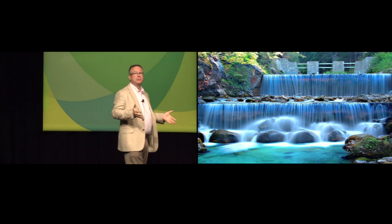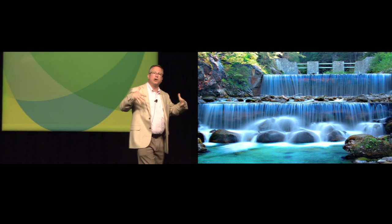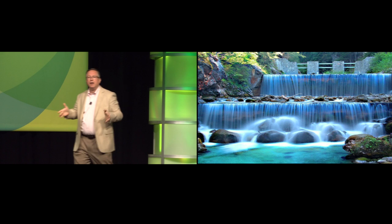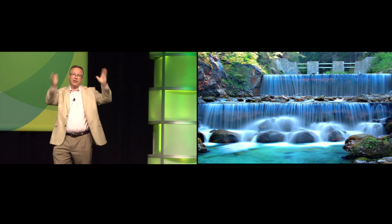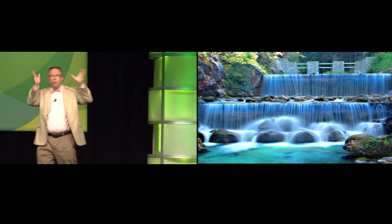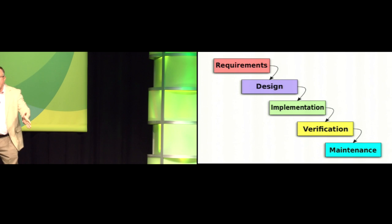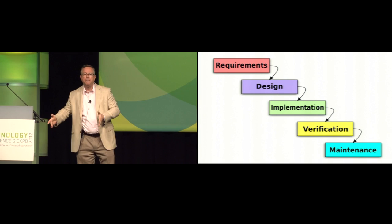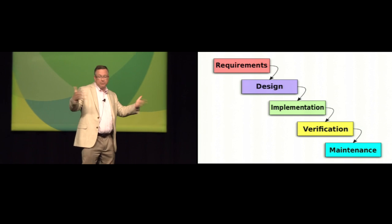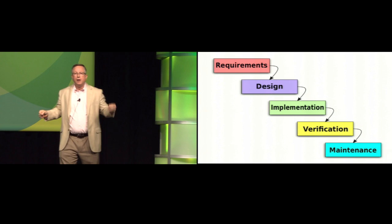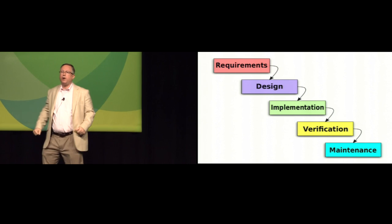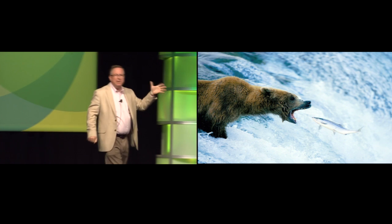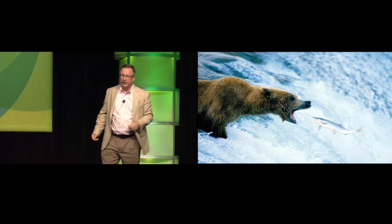Before Agile, software was developed using something called the waterfall model. It was called this because projects would be structured so that they begin with a particular stage — let's say requirements gathering. Then once that phase is over, we go to design. Then once it's designed, we implement. And finally, we get to deployment. It kind of looks like a waterfall, and on paper it looks very pretty. But the problem is, if you get to the bottom of the waterfall and someone says, actually, our requirements have changed, let's go back — it can be painful to make your way up that waterfall.